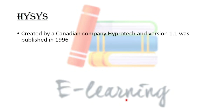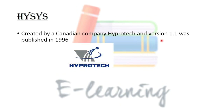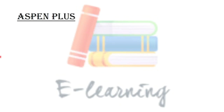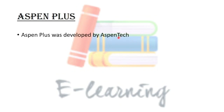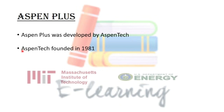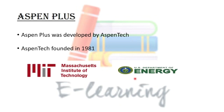HySys was created by a Canadian company, Hyprotech, and the first version was launched in 1996. As far as Aspen Plus is concerned, Aspen Plus was developed by AspenTech, which is an American company. AspenTech was founded in 1981 as a result of a joint project between MIT and the US Department of Energy.